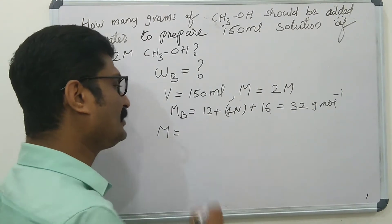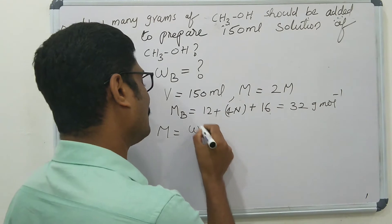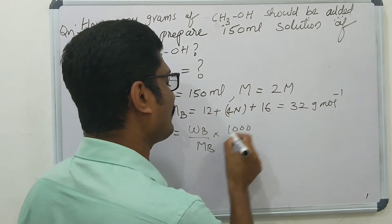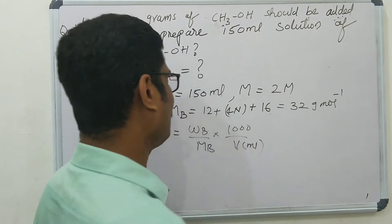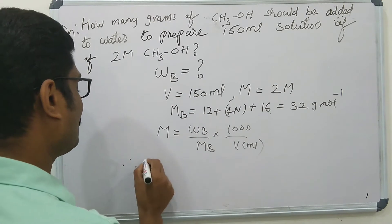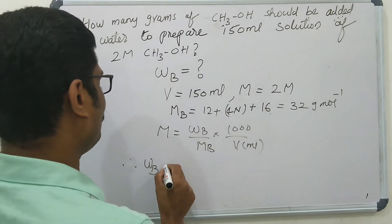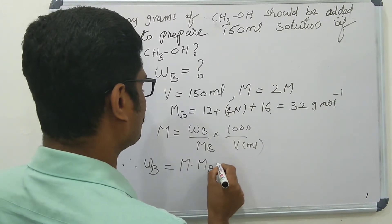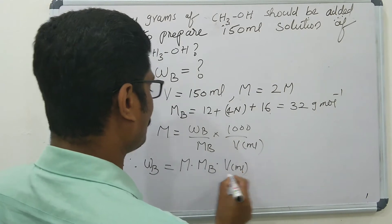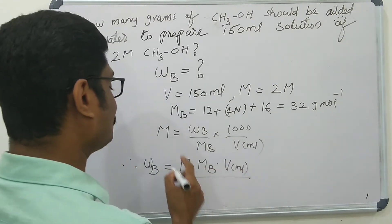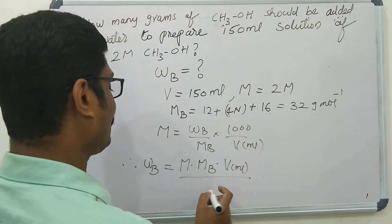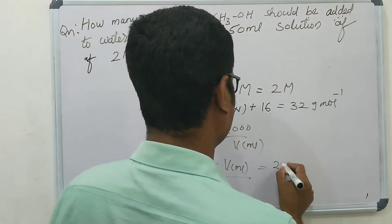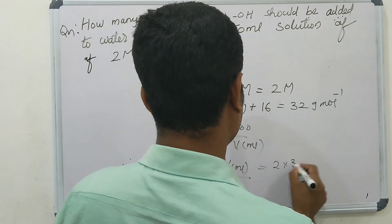Now we know the molarity of solution. The formula is: molarity = (WB / MB) × (1000 / volume in ml). Therefore, mass of solute WB is equal to molarity into molar mass of solute into volume of solution in ml divided by 1000. Here the molarity is 2 mol/L and molar mass is 32.